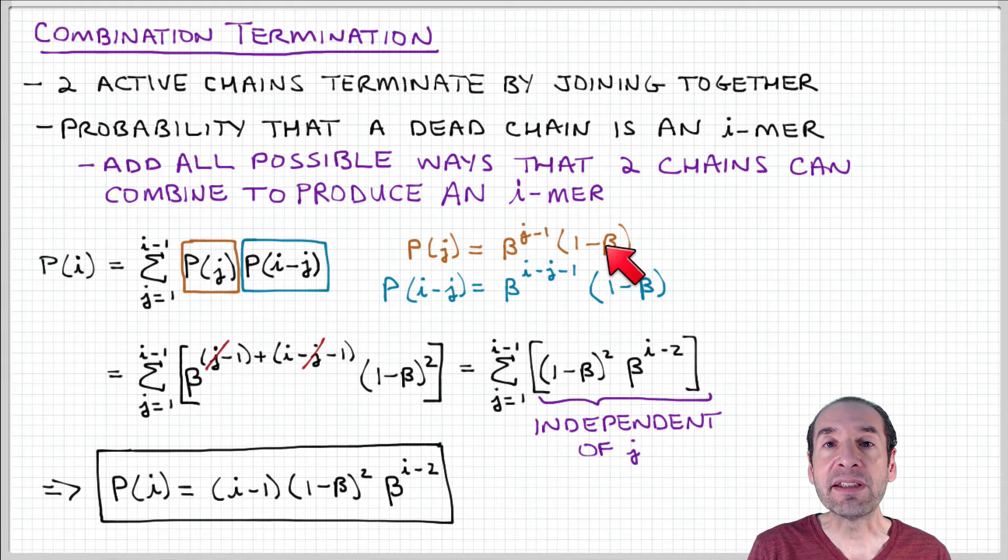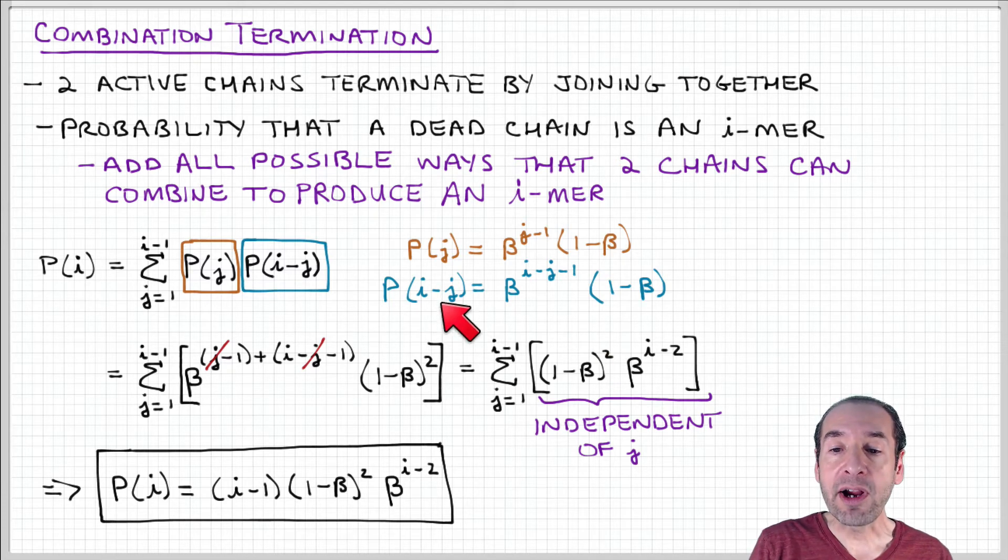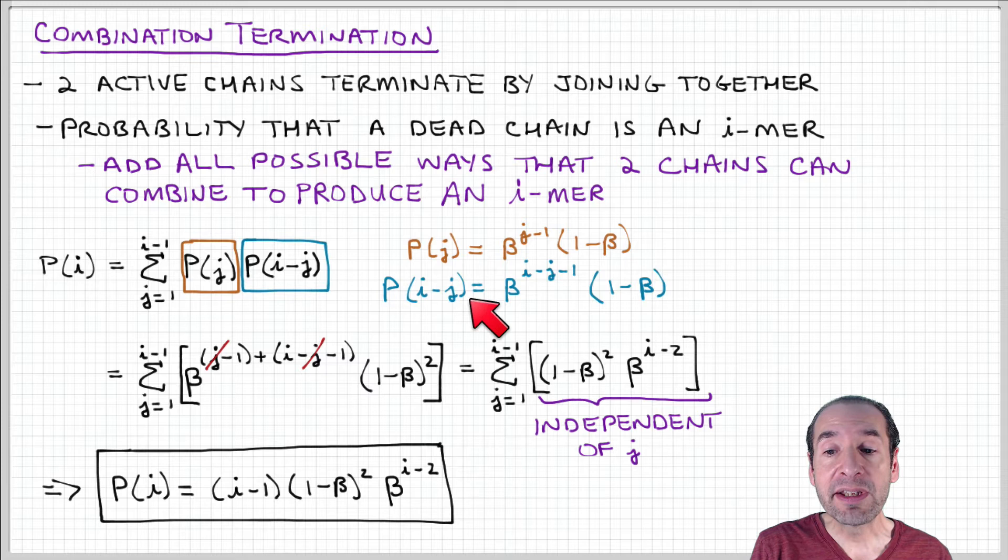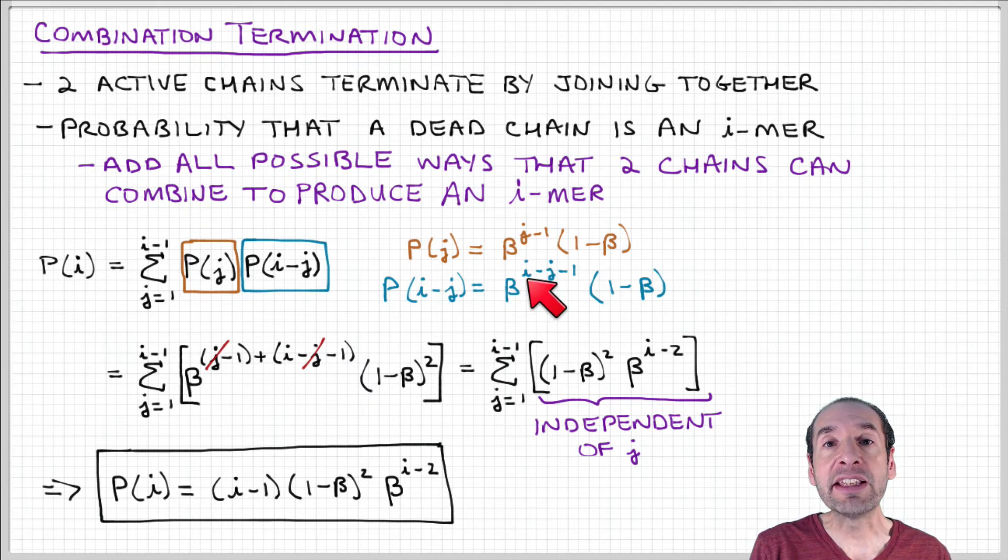Times 1 minus beta, which is the probability that the next step is a termination step. Then for the i minus j-mer, we have the probability that a chain is propagated to a length i minus j.